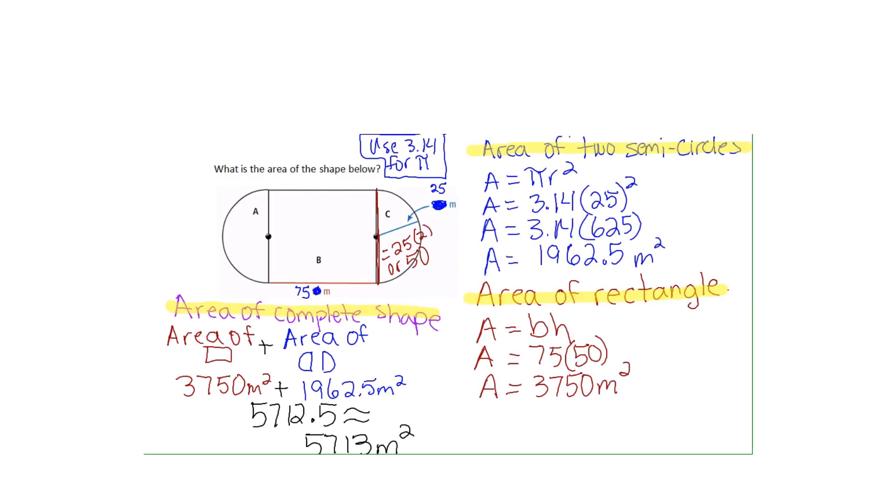Okay, these are the steps of finding the area of the new dimensions. I have highlighted the area of the two semicircles, and this is the area of the rectangle, and this is the area of the complete shape. My final answer when I rounded to the nearest whole number is 5,713 meters squared.